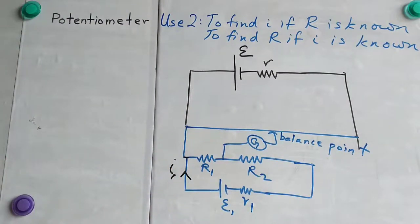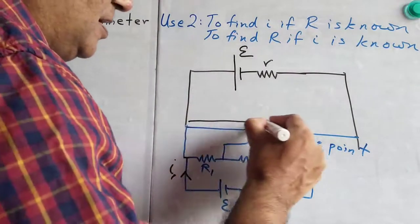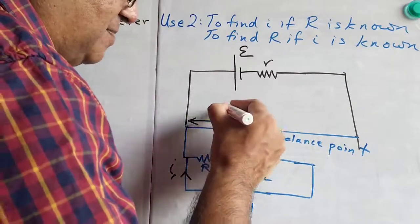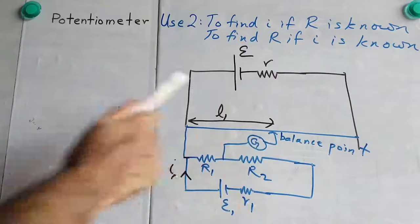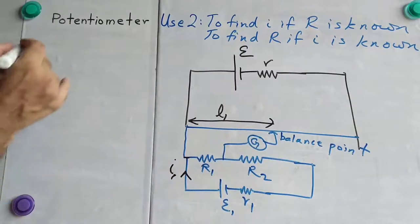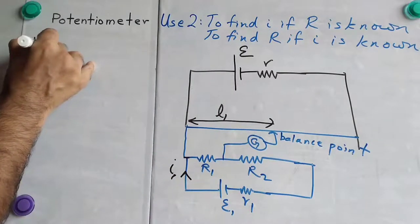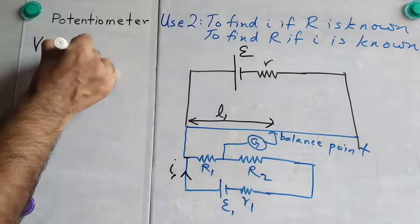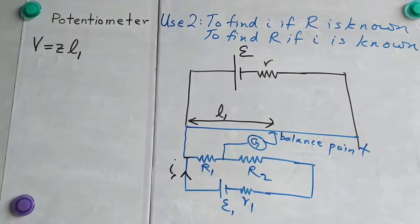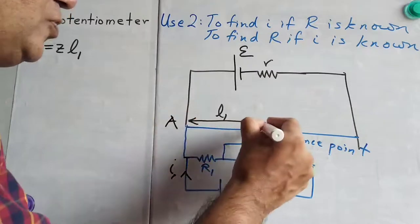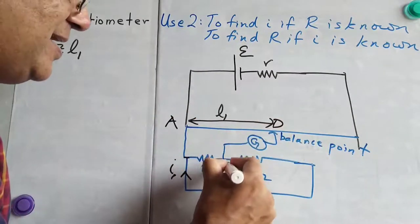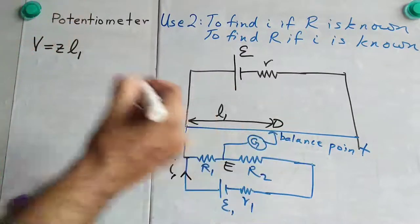Now, this length, we can measure. This is the balance length. And the potential drop across that length will be given by Z into L1, because Z is the potential drop per unit length across the potentiometer wire, that we call it potential gradient. And if we go from here to here, and here, back here, and travel this loop,